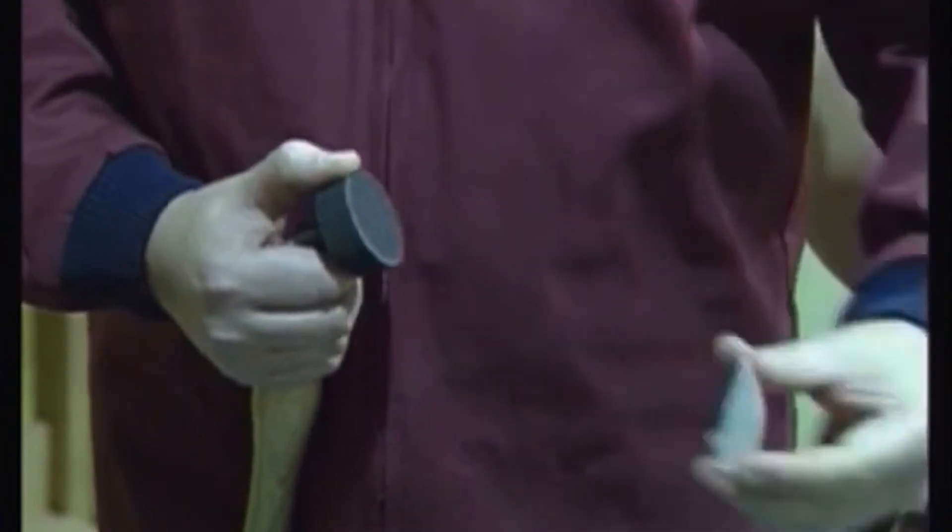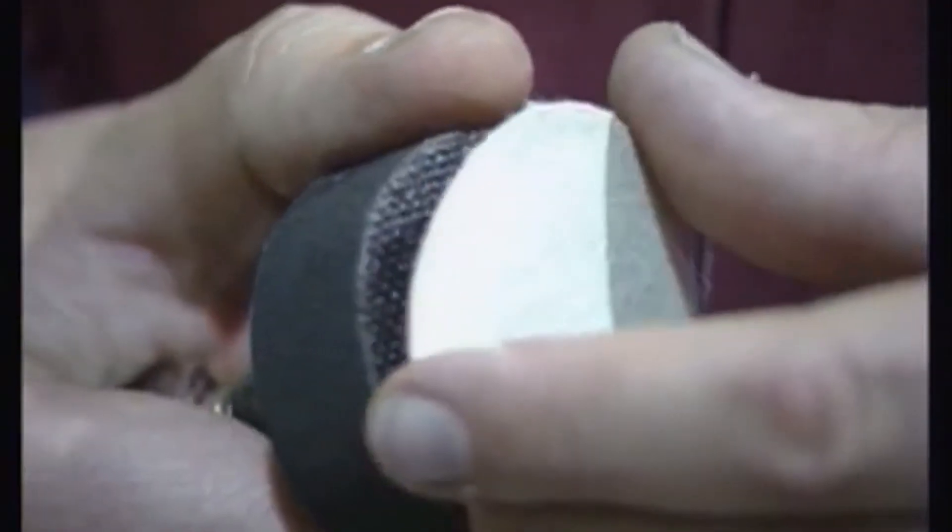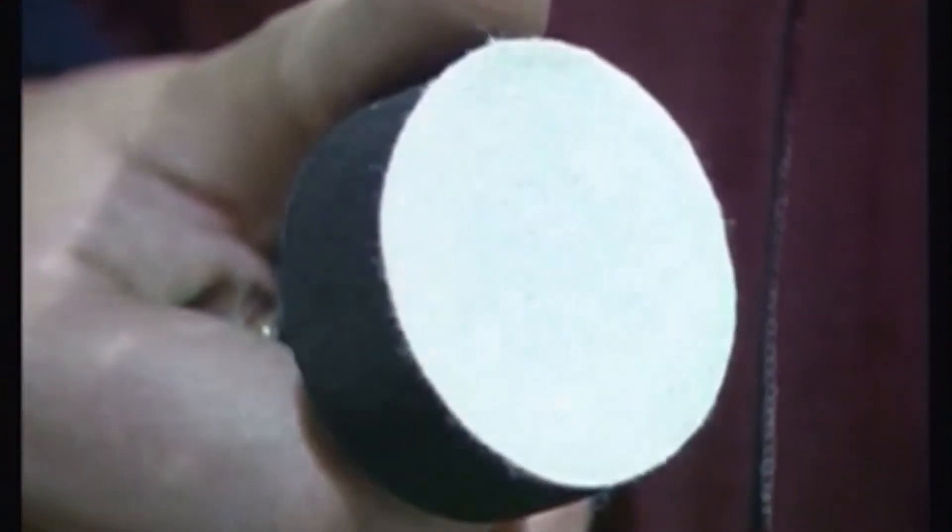Changing the disc is done by holding the head securely and peeling the cloth backed disc from the velcro pad. It takes literally seconds to remove one disc and replace with the next finer grit.